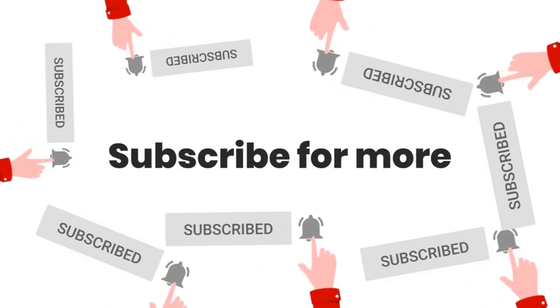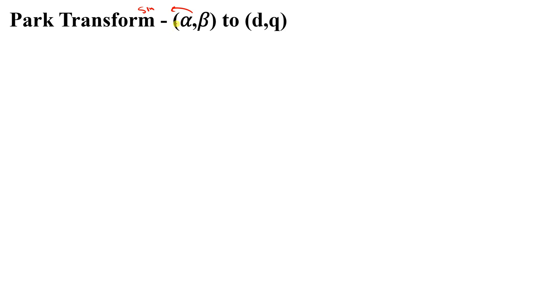Now let's start our lesson. This will lead us to the next transformation, which is the Park transform, which converts the two-phase into a DQ frame — or direct and quadrature axis frames. What does DQ even mean, or why do we use DQ? You will understand right now. In the end, you will find that we had these two sine waves — sinusoidal waves changing with time — however, the DQ frame gives DC values, which makes it easier to control them.